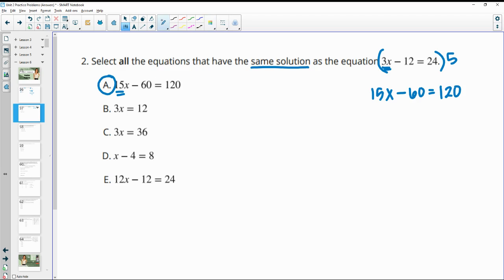For B, we see we just have the 3x here, so we've gotten rid of this negative 12. So in order to get rid of this negative 12, we want to make it a 0. And to do that, we would add 12. And if we add 12 to one side, we need to add 12 to both sides. So negative 12 plus 12 is 0, so we just have 3x. And then 12 plus 12 is 36, not 12. So Part B is wrong, or not the same solution. But we see Part C is what we have, so that one would be good.